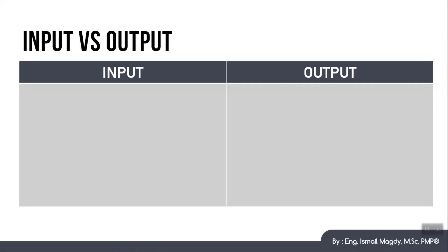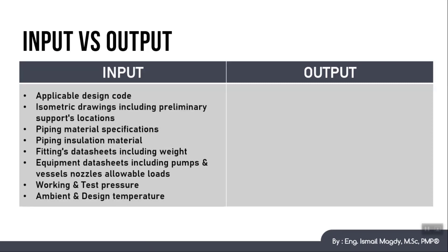In order to start creating our pipe stress analysis 3D model, there are multiple data that we must ensure having before starting. The most important input data needed are as follows. You need to know the applicable design codes for your project as per the client's requirement. ASME code is one of the most commonly used, however you need to confirm the client's requirement in advance.